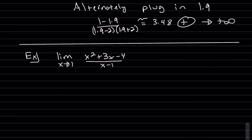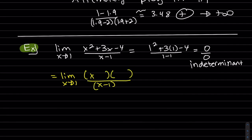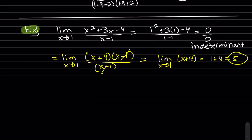So we plug 1 in and again get indeterminate, which means we have work to do. We're going to try factoring the top, and that does work — those factors cancel. Now we can plug 1 in and that's our answer: that's the limit as x approaches 1.